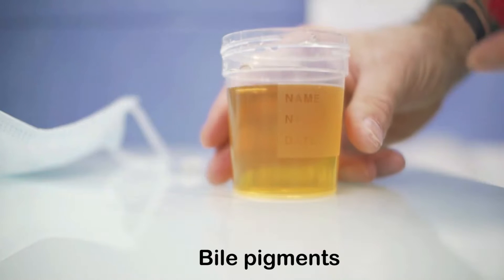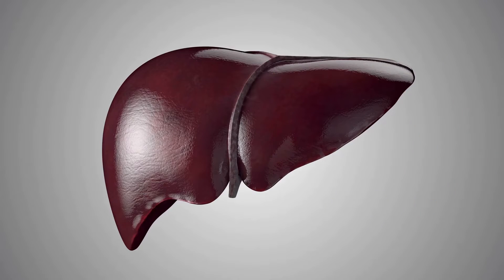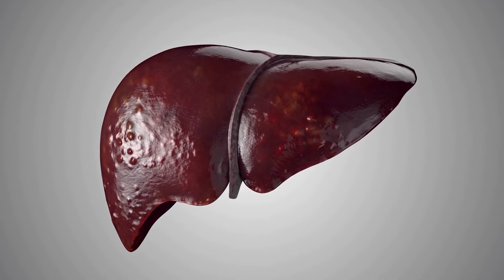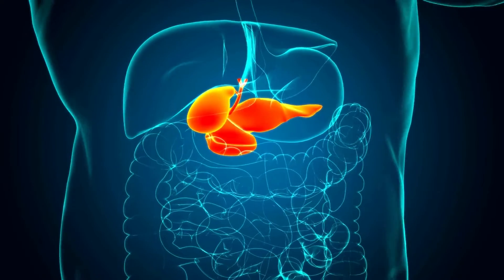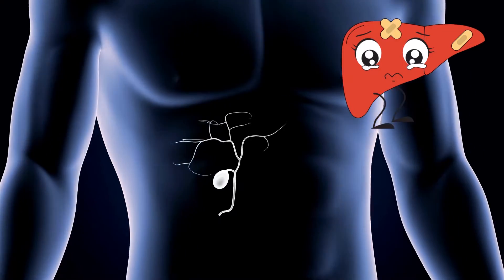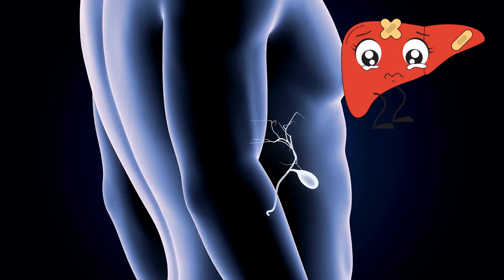Clinical Conditions: Normally, there are no detectable levels in urine. Bile pigments serve as an early indicator of liver disease, hepatic cirrhosis, gall bladder disease, cancer, bilirubinuria, obstruction of the bile duct, and liver damage.